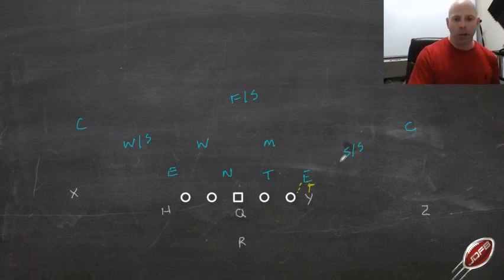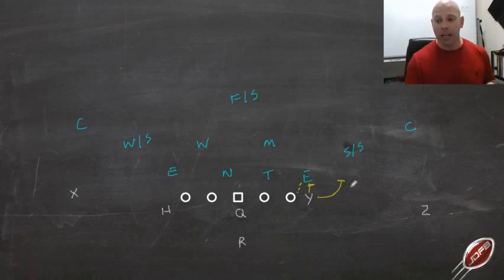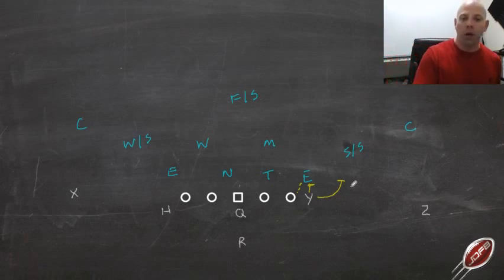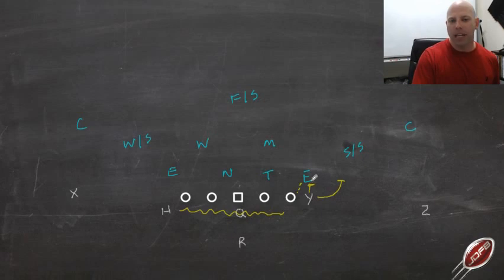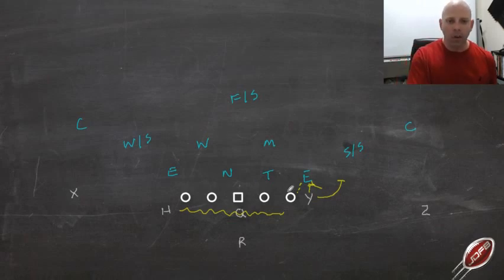As the 7-technique goes to strike and that tight end goes out, he slides out and is now vulnerable to getting kicked out. Say it was a pin and pull, or maybe the H back in motion on power — if this guy doesn't have his visual key, he's chasing the Y out and getting kicked out. But as his pressure key leaves, his eyes are looking at the hip of the tackle. If the tackle blocks down, he squeezes.